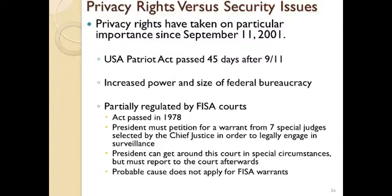FISA stands for the Foreign Intelligence Surveillance Act, passed in 1978. According to this, the president has to petition for a warrant from seven special judges selected by the chief justice. In order to legally engage in surveillance, they need to present their evidence and get approval from these seven special judges. The president can get around this court in special circumstances, but still has to report to the court afterwards to justify what was done. Probable cause does not apply for FISA warrants — it's a much lower burden. If they have reasonable evidence that you might be engaged in espionage, they can act.